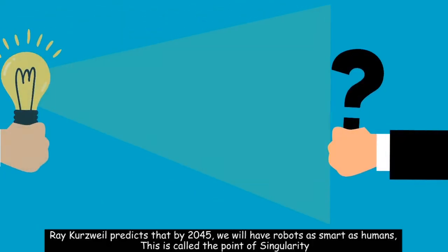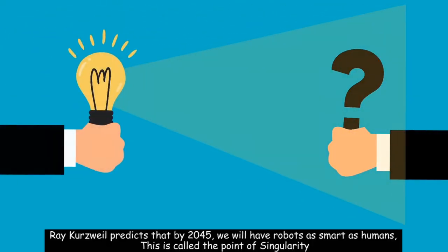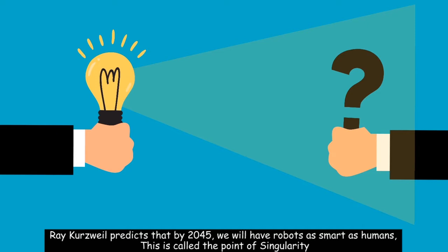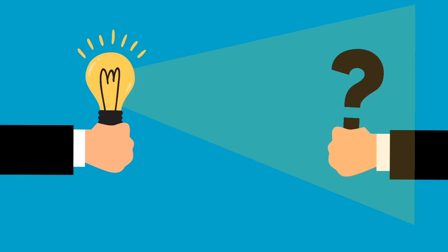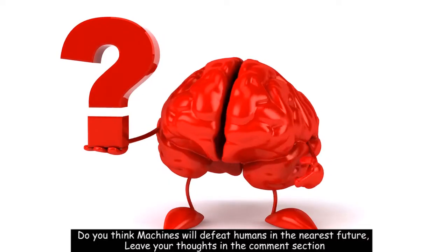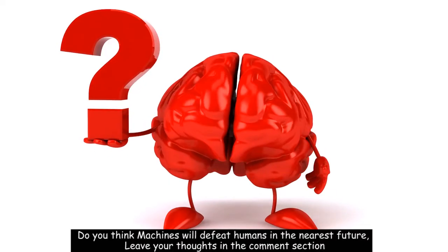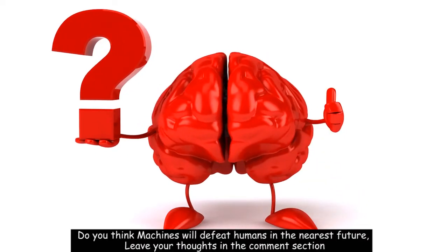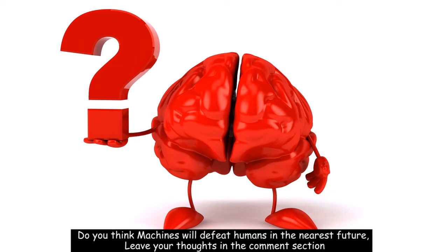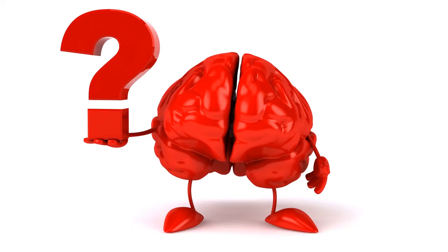Ray Kurzweil predicts that by 2045 we will have robots as smart as humans. This is called the point of singularity. What do you think? Do you think machines will defeat humans in the nearest future? Leave your thoughts in the comment section.